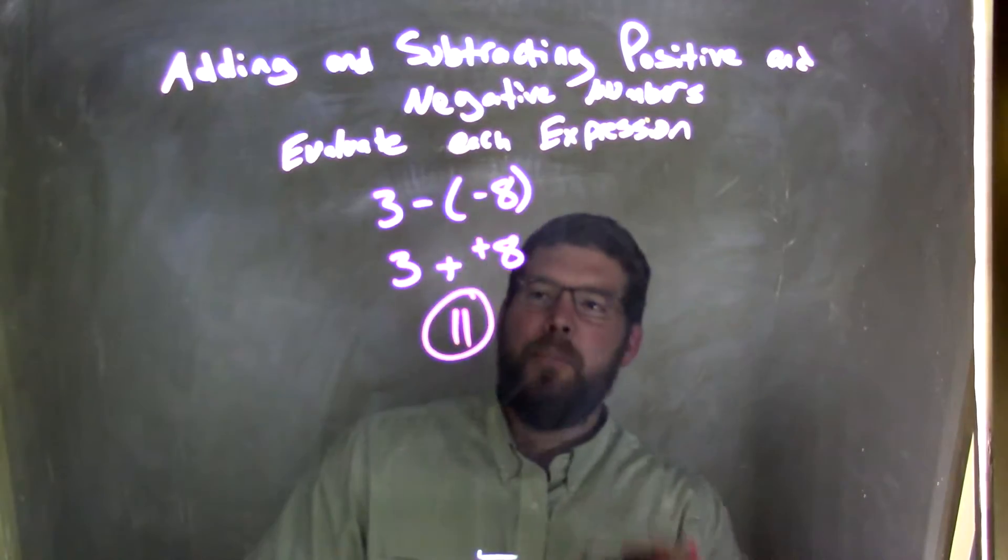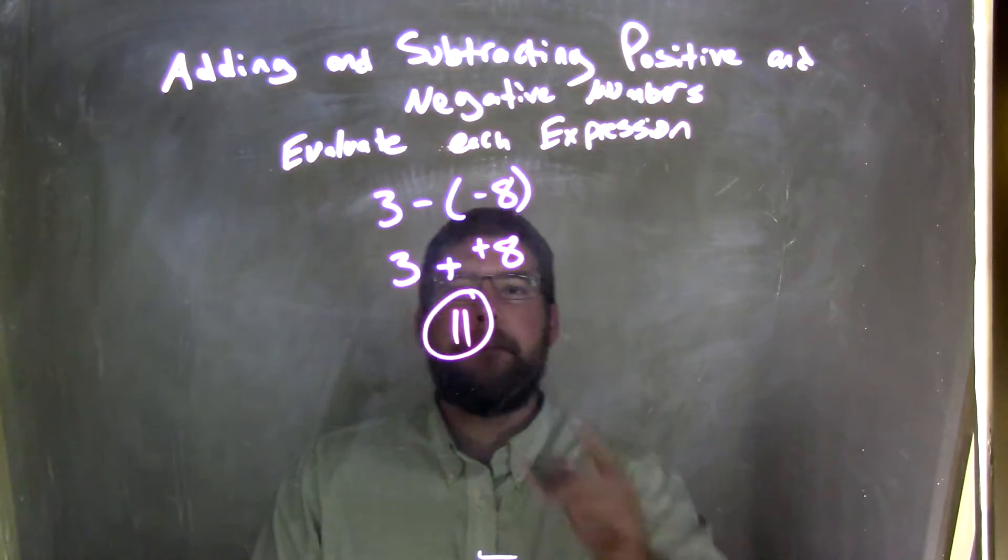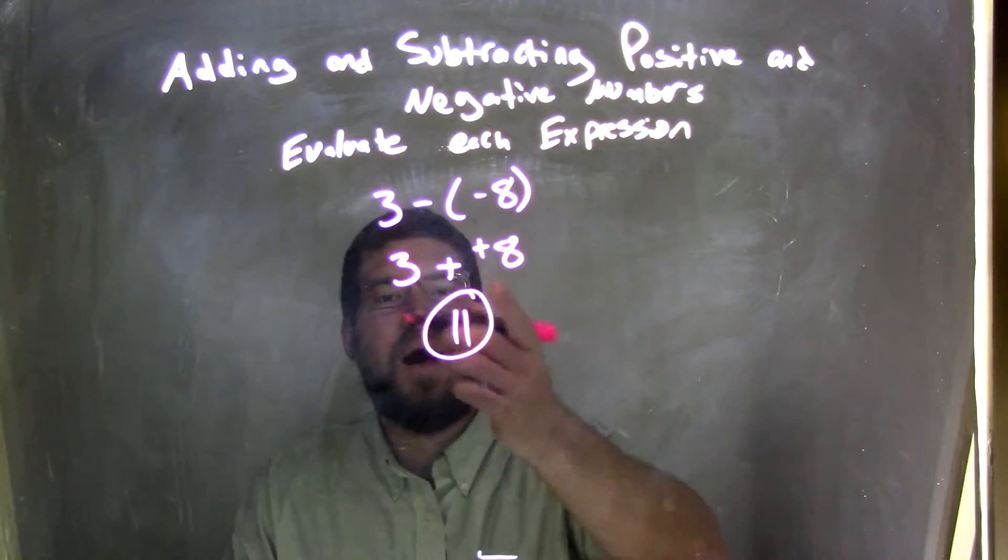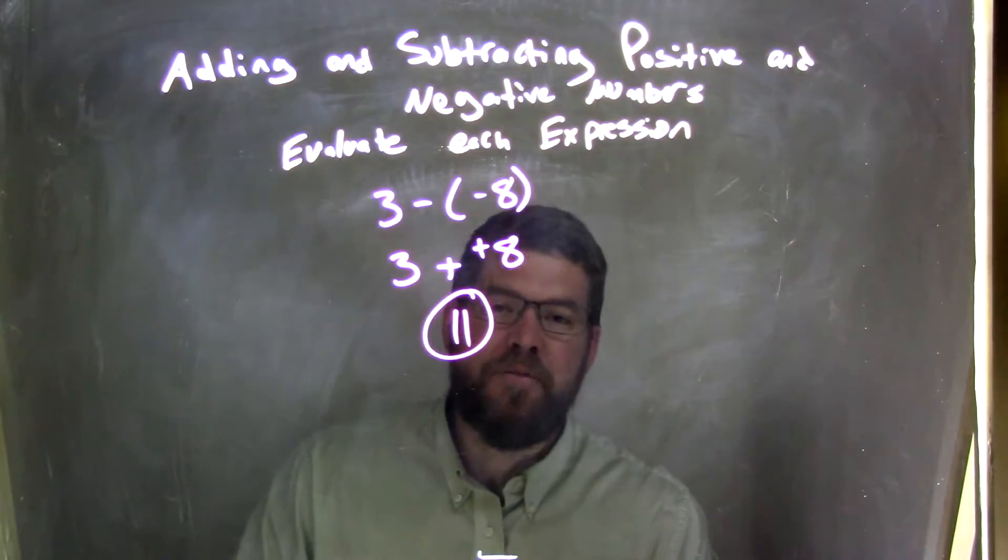So again, let's recap. We started with 3 minus a negative 8, and we know that minus a negative is the same thing as adding a positive. So we had 3 plus a positive 8, and that gave us 11, which is our final answer.